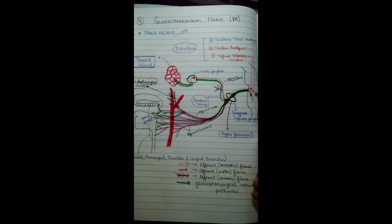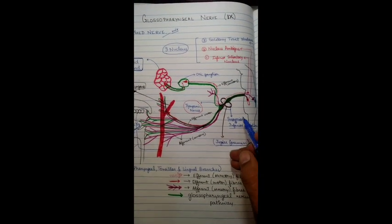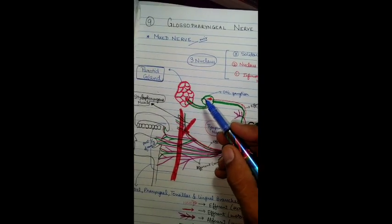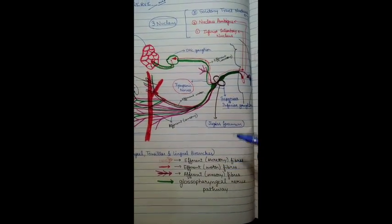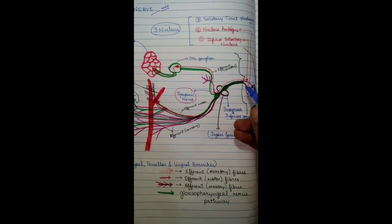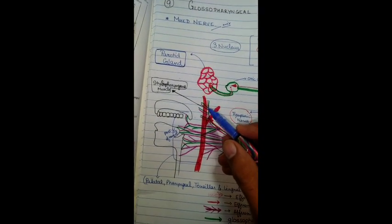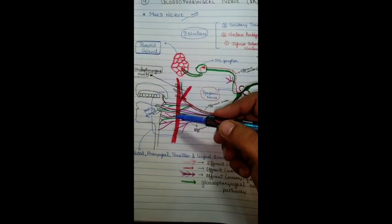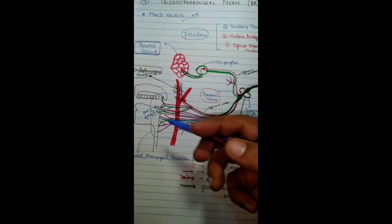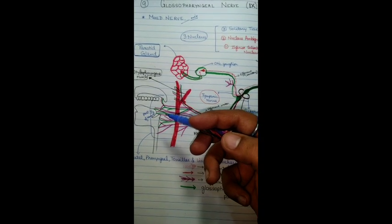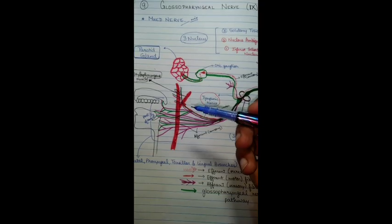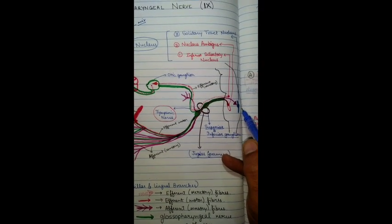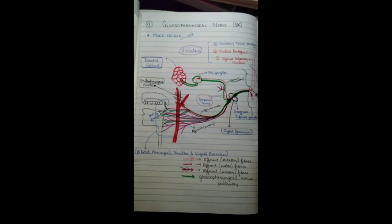So now I have described all three fibers. First are the efferent secretory fibers, which arise from the inferior salivatory nucleus and innervate the parotid gland. Second are the efferent motor fibers that arise from the nucleus ambiguus and innervate the stylopharyngeus muscle in the pharynx. Third are the sensory fibers, which come from organs like the pharynx, tympanic cavity, tonsil, palate, palatal arches, and the posterior one-third of the tongue, and end at the solitary tract nucleus — the third nucleus of the glossopharyngeal nerve.